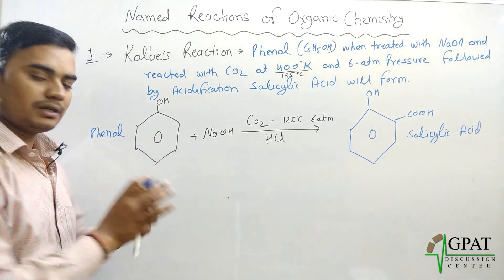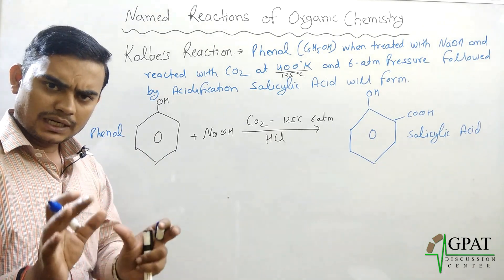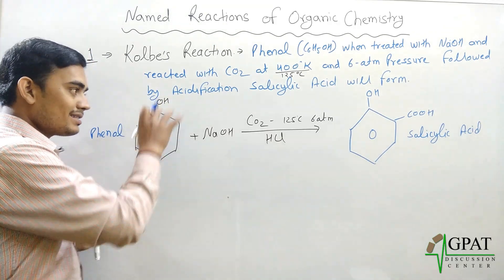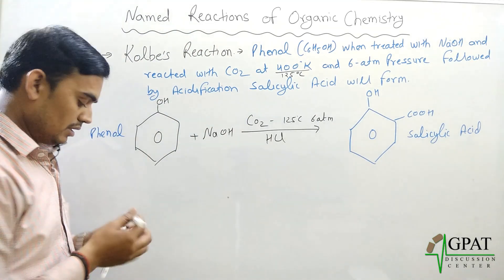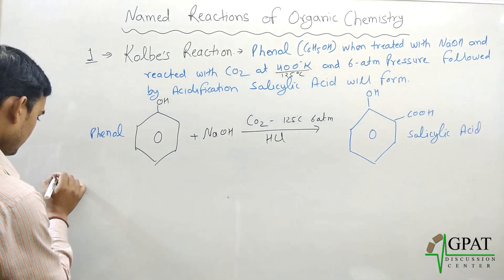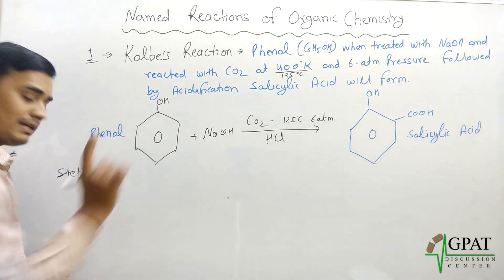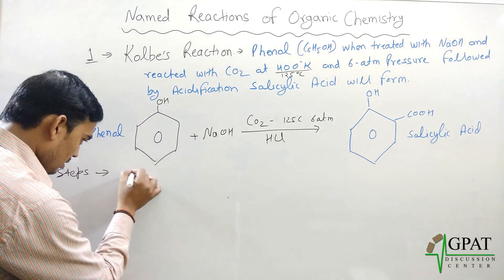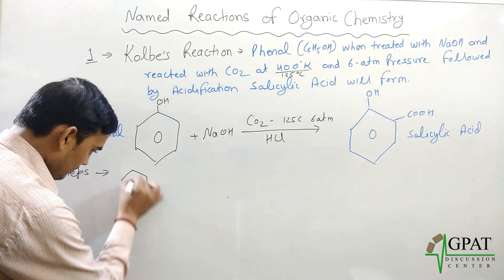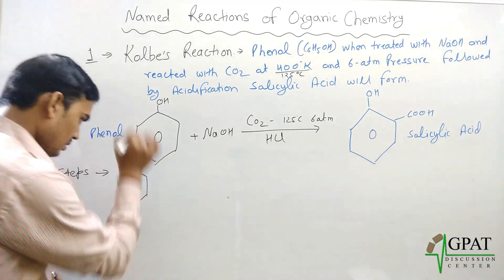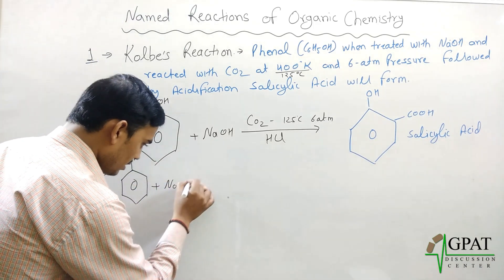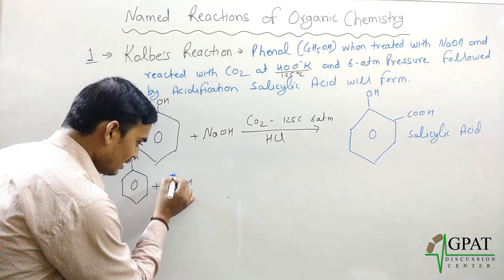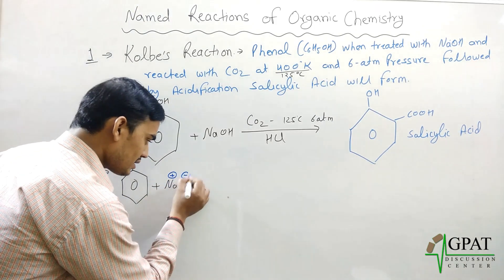The mechanism of this reaction is somewhat complicated, but I will discuss it step by step so you can easily understand how phenol is converted to salicylic acid in Kolb's reaction. I will discuss the steps one by one, so follow carefully what I am saying. Firstly, this is your phenol compound. It reacted with sodium hydroxide.